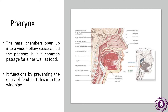Next is the pharynx. The nasal chambers open into a wide hollow space called the pharynx. Here is a detailed diagrammatic representation of the pharynx. Its function involves preventing the entry of food particles into the windpipe. There is an epiglottis present on the pharynx — it is an elastic cartilage that serves as a switch between the larynx and the esophagus, which is the food pipe, allowing the passage of air into the lungs.